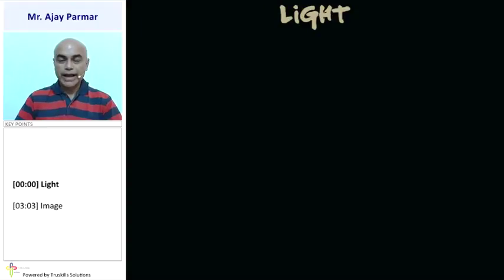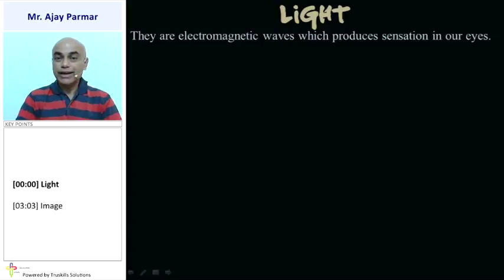Let us study about light in this particular chapter. In fact, light is nothing but electromagnetic waves which produce sensation in our eyes and due to which we can see different things.